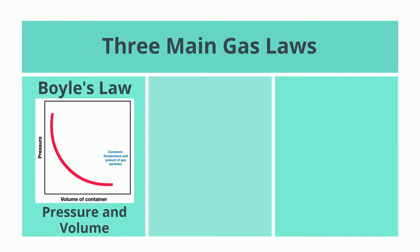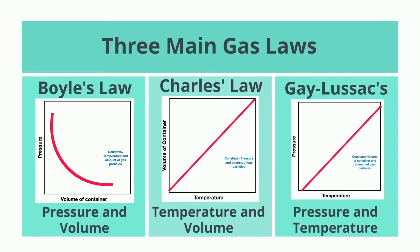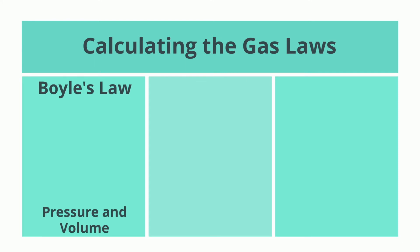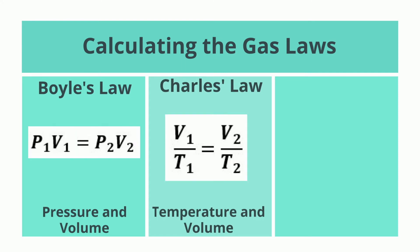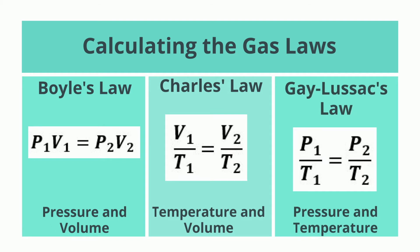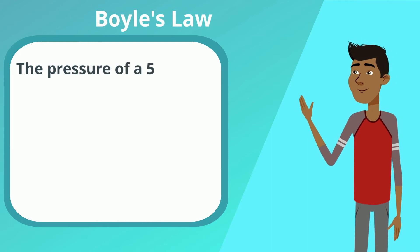So Boyle's Law is on pressure and volume, Charles' Law on temperature and volume, and Gay-Lussac's Law on pressure and temperature. Calculating the gas laws: Boyle's Law, Charles' Law, and Gay-Lussac's Law all have certain formulas to follow.